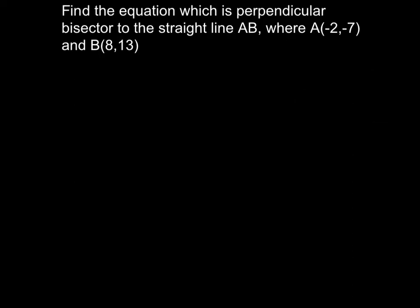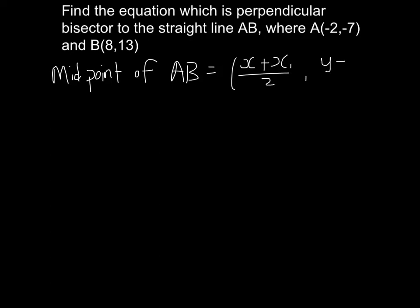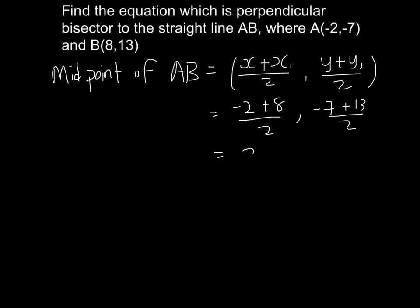So first, I find the midpoint of AB. The midpoint formula is very simple: midpoint equals (x1 + x2) / 2 comma (y1 + y2) / 2. So let me call this one x1 and this one x2. The midpoint of AB is (3, 3). So the midpoint of AB is (3, 3).